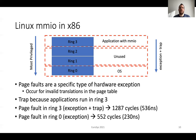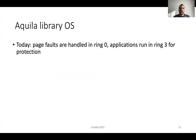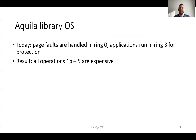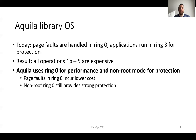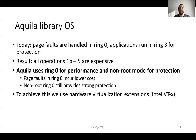This is an important design aspect and Akila tries to take advantage of this fact. Today, page faults are handled in ring 0 and user applications run in ring 3 for protection. For this reason, all operations in the miss path are expensive. This includes virtual address space manipulation, cache management, device IO and other management operations. We design and implement Akila that uses ring 0 for performance and non-root mode for protection. In this case, page faults in ring 0 incur lower costs and non-root mode still provides strong protection. To achieve this, we use hardware virtualization extensions.